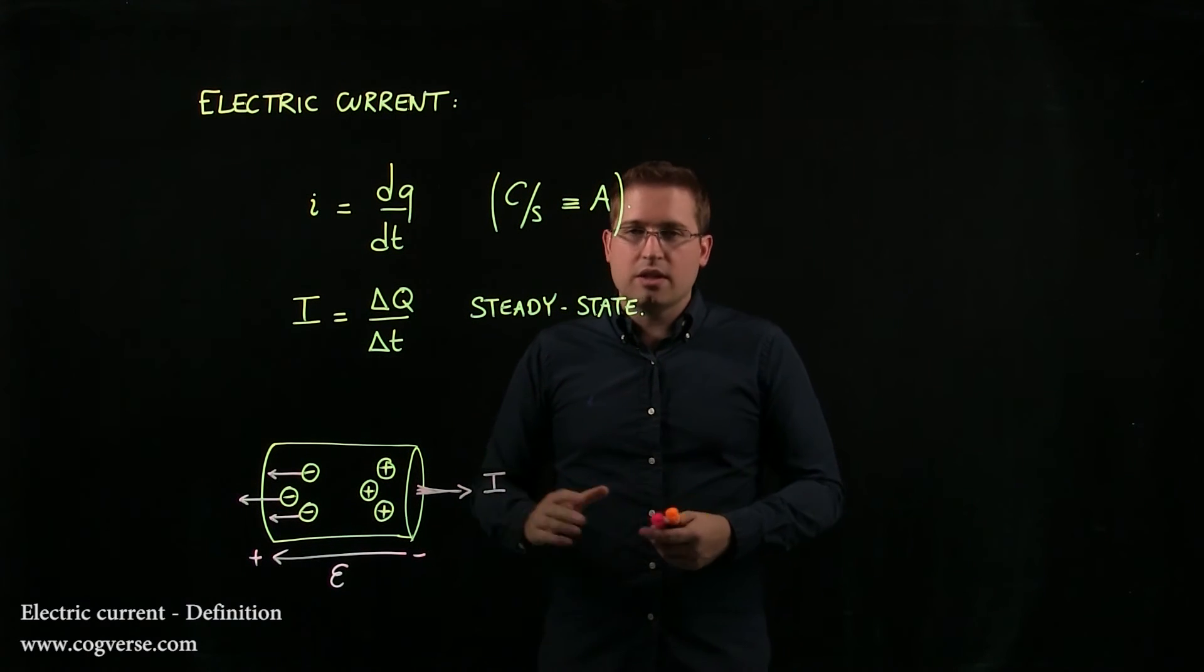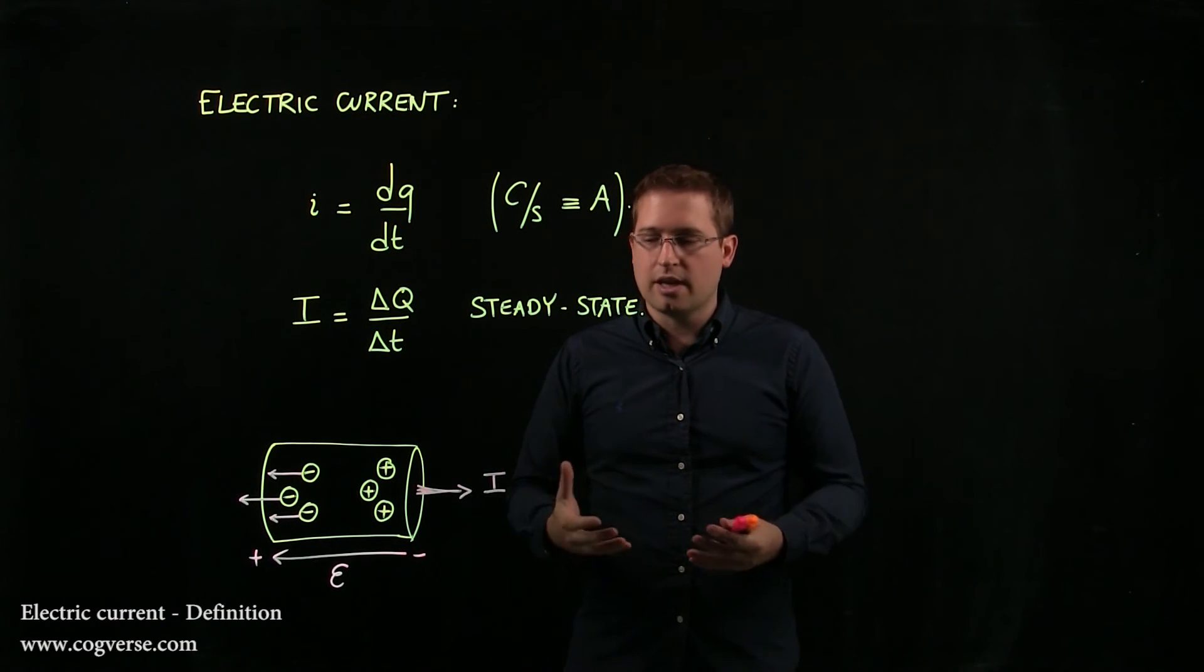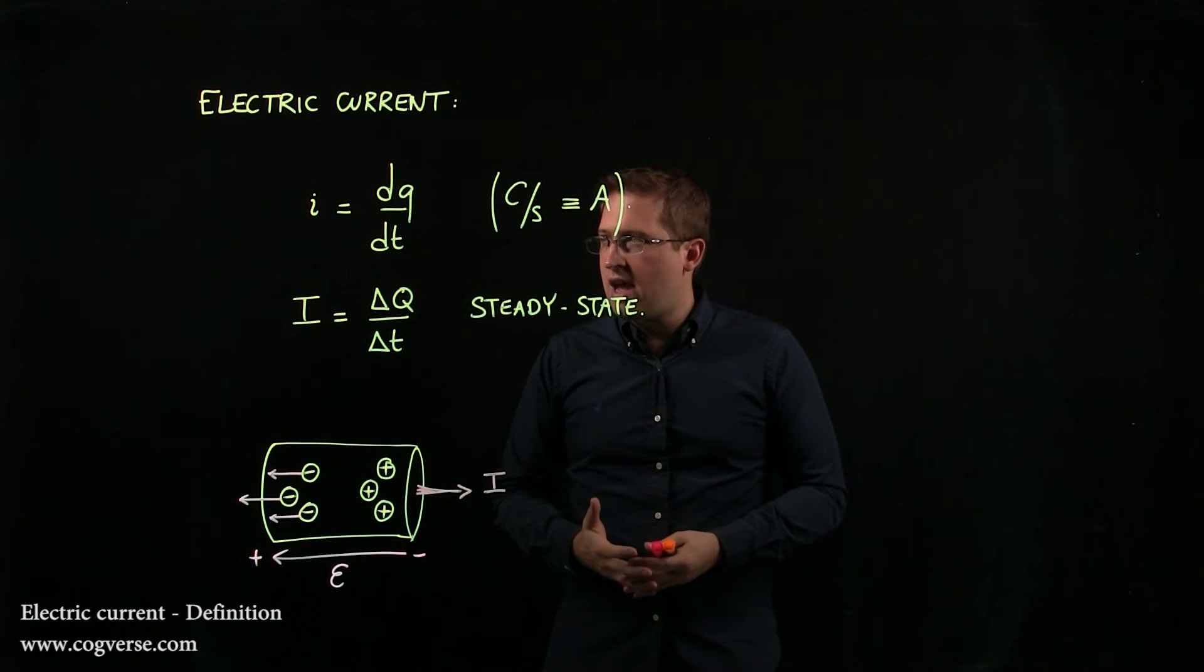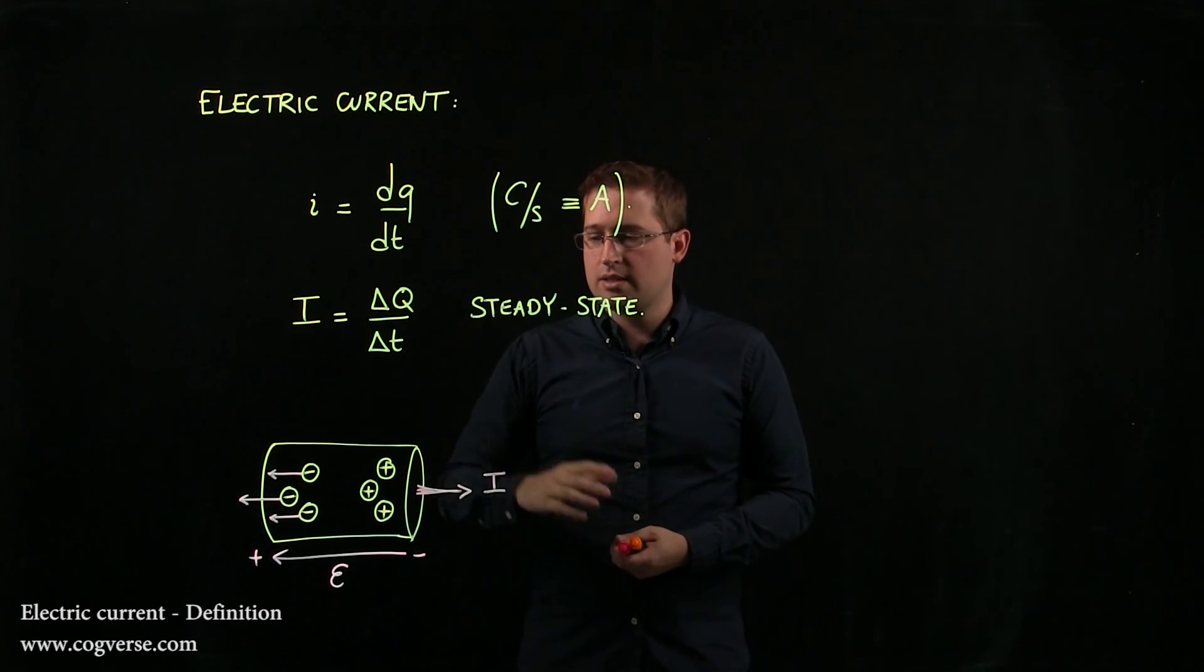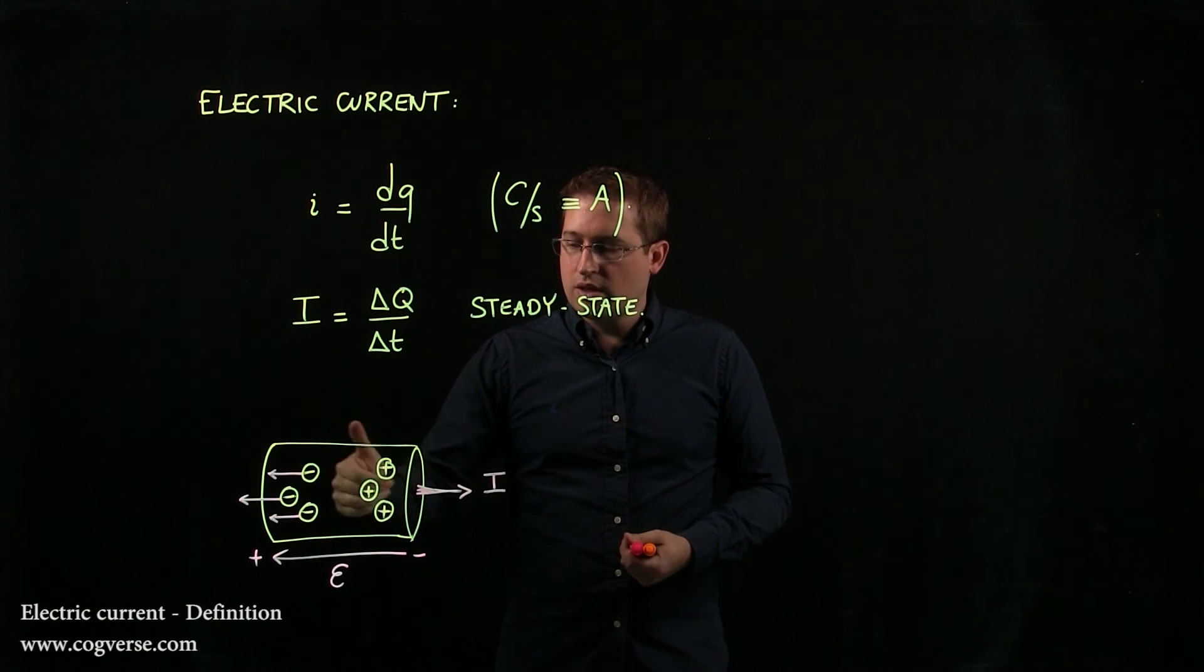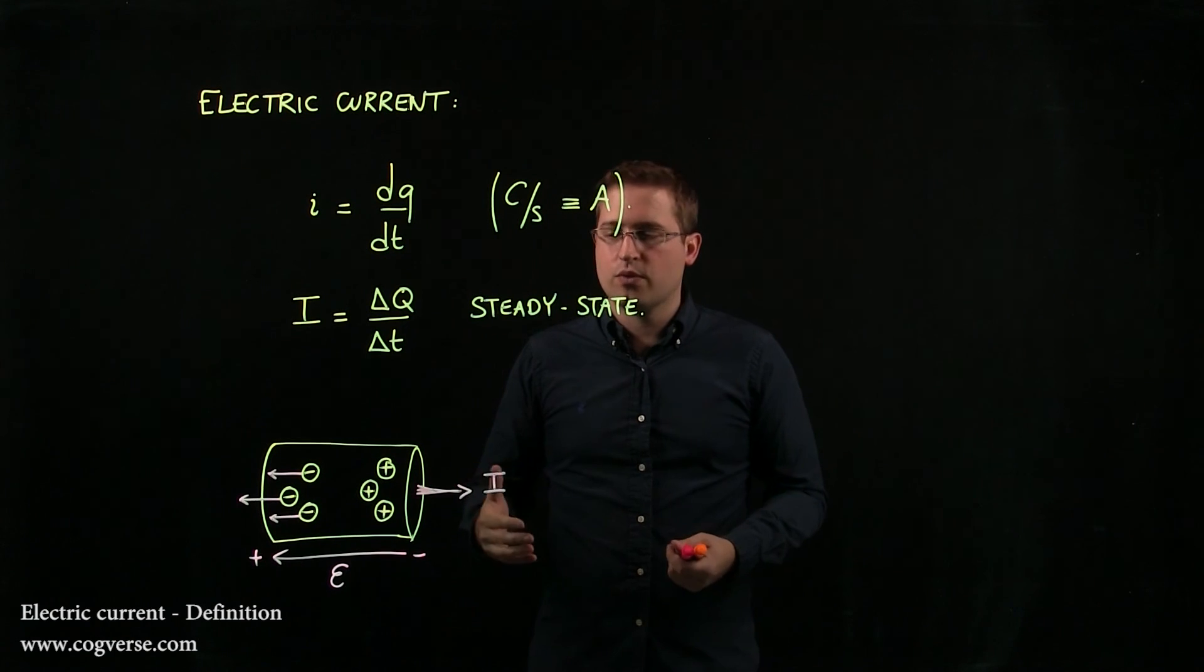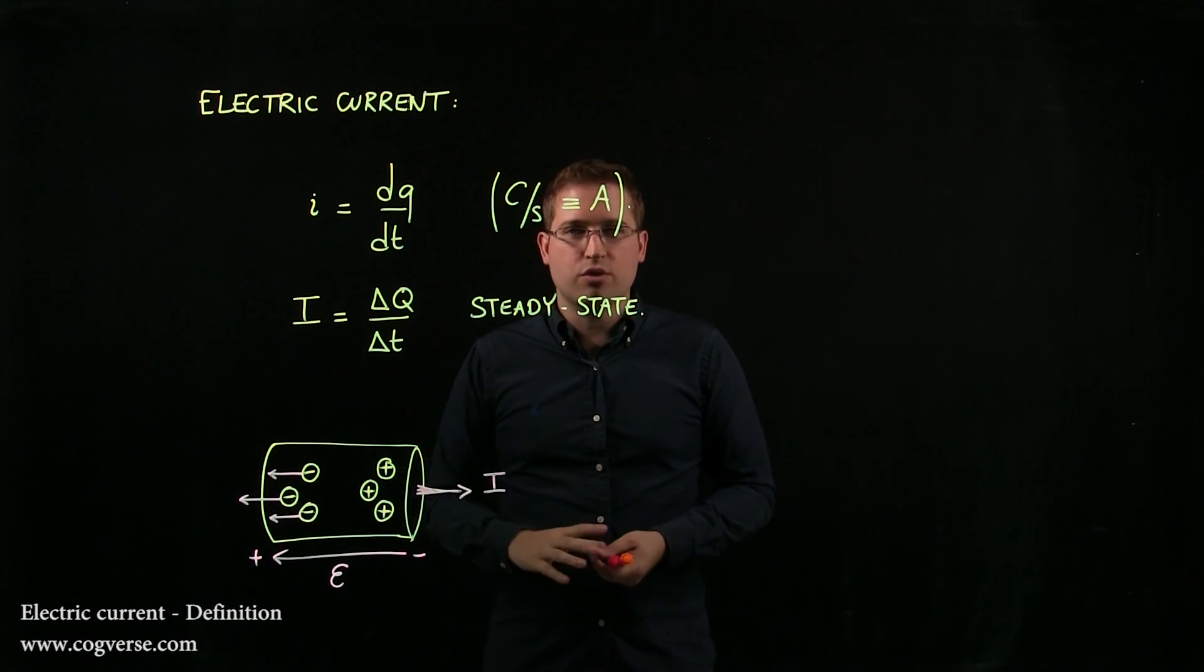But we'll see that that will not have much incidence on the problems that we solve and the problems that we look at in this course. Just remember that i is generally dq over dt, unless you have a steady state, and the direction of current is the direction of the motion of positive charge, or if you prefer to remember it this way, opposite the direction of the motion of the electrons.